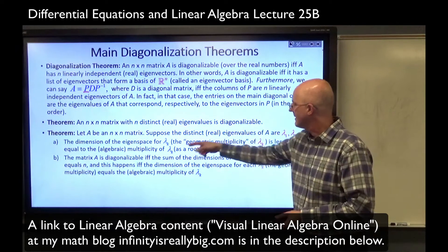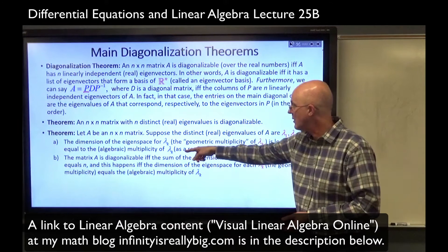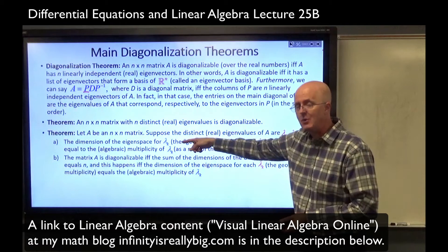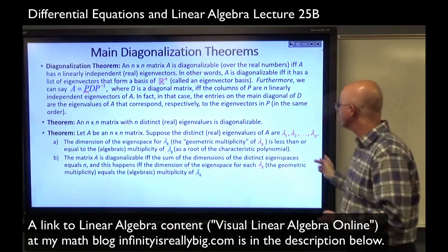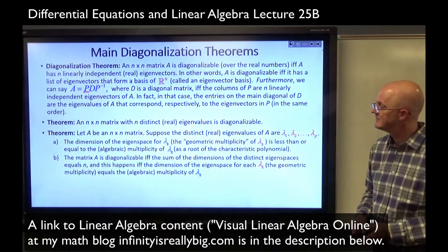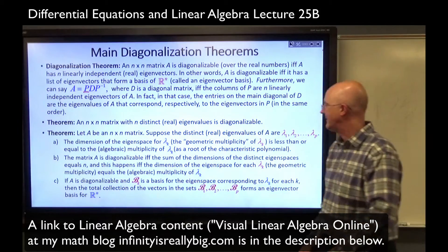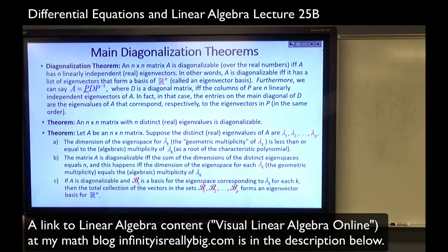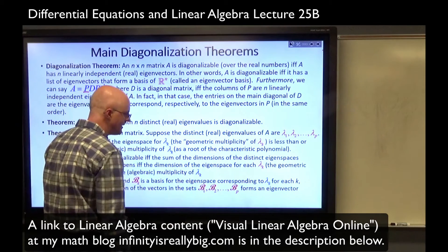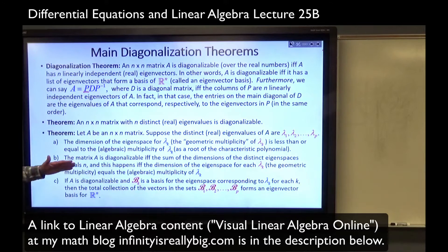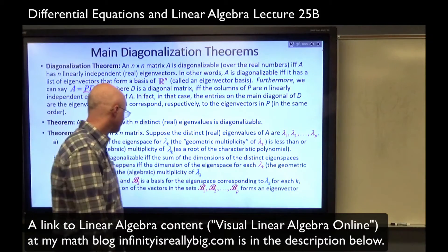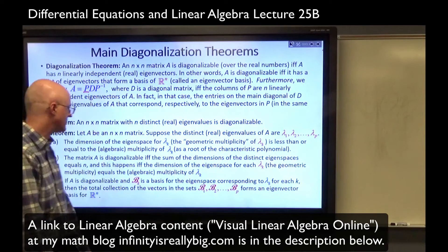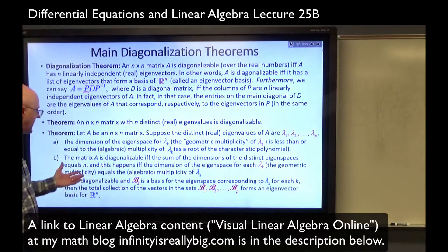So if lambda K has an algebraic multiplicity of two, and if the dimension of the eigenspace for that lambda K is two, and if that kind of thing happens for all these lambdas, then A will be diagonalizable. If A is diagonalizable and B_K is a basis for the eigenspace corresponding to lambda K for each K from one to P, then the total collection of all the vectors in those sets combined forms an eigenvector basis for Rn. You could also say: if all those eigenspaces together form an eigenvector basis of Rn, then A will be diagonalizable, because those vectors are going to be n linearly independent eigenvectors for A.